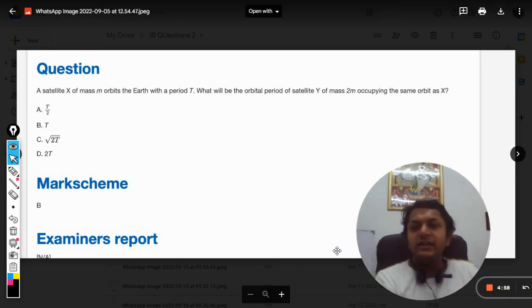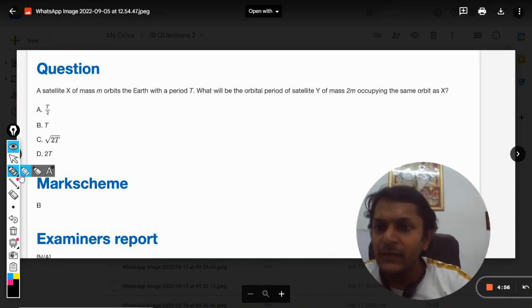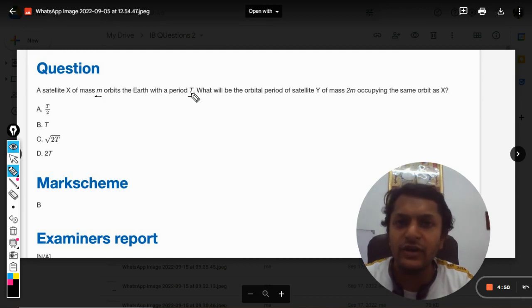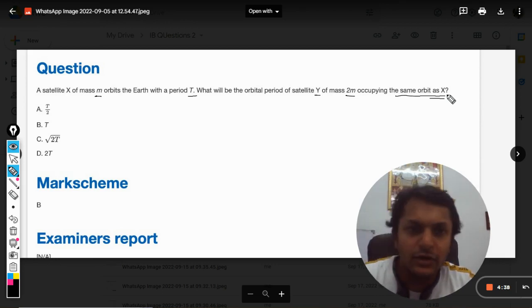Okay dear students, let us see what is there in this question. A satellite X of mass m orbits the Earth with a time period of capital T. What will be the orbital period of satellite Y of mass 2m occupying the same orbit as that of X?